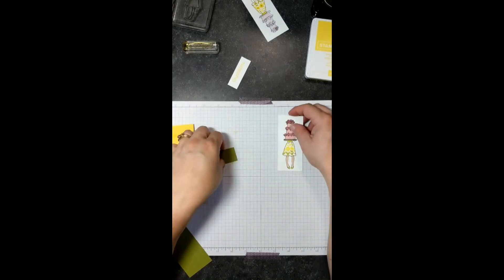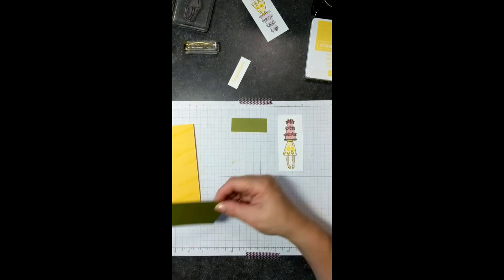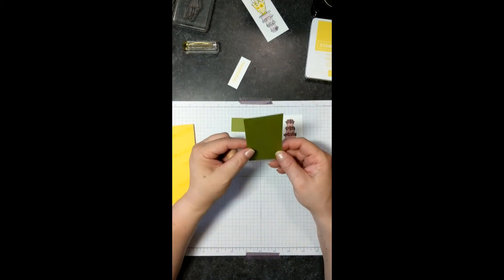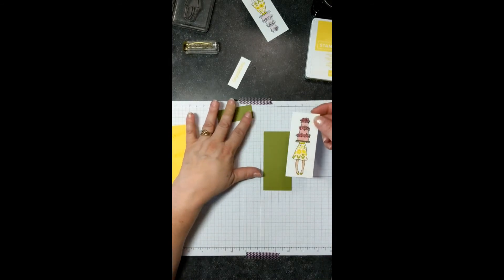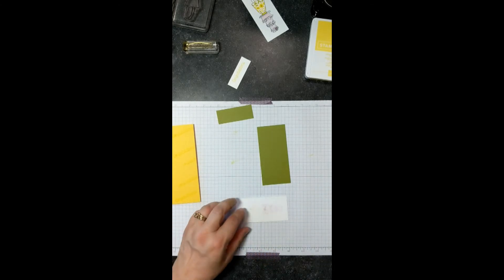Okay, now we're ready for assembly and we're going to get our pieces. I've got a piece of Old Olive and it is, just let me double check, 2 inches by 4 1/4 inches. And we are going to layer our stamped piece onto that using Snail.